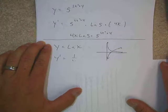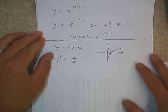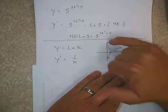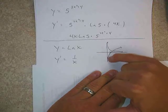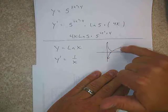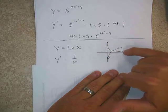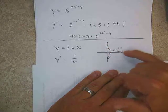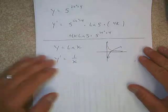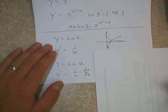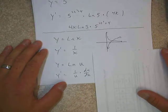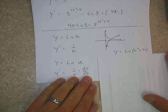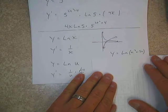Another type of function is the natural log function. The derivative of natural log of x is 1 over x. You'll notice the natural log function is always increasing, so its derivative is always positive. The slopes are steeper on the left and get shallower as we move right, meaning the y-values of the derivative slow toward zero. The general chain rule form is: the derivative of ln(u) equals 1 over u times du/dx.